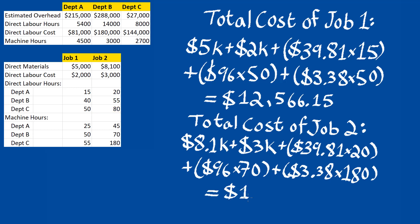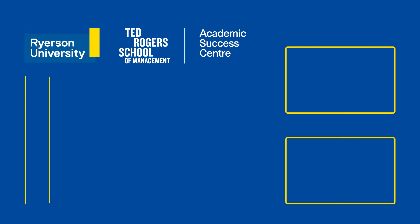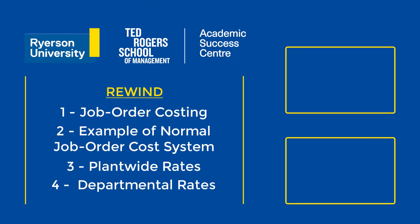As you can see, merely changing one of the departmental overhead rates results in different total job costs. Thank you for watching this video on job order costing. We went through the material quite quickly, so feel free to rewind to any section and review it carefully to clear up any confusion.